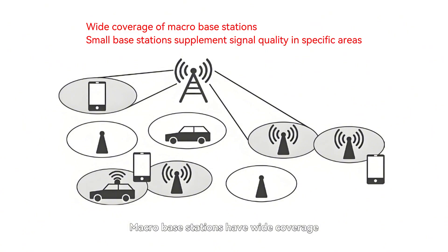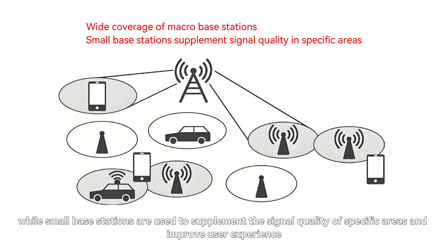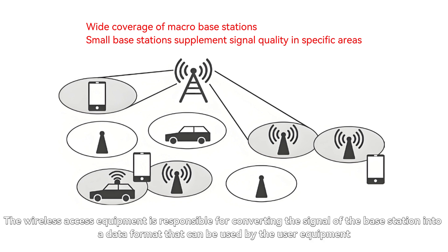Macro base stations have wide coverage, while small base stations are used to supplement the signal quality of specific areas and improve user experience. The wireless access equipment is responsible for converting the signal of the base station into a data format that can be used by the user equipment.